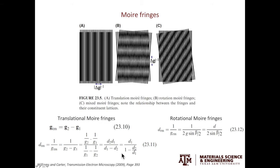Moving to the rotational moiré fringes. In this case, we assume we have only one type of lattice planes, but the top layer is rotated against the bottom layer. The spacing of the moiré fringes is a function of the rotational angle beta. It is simply d, the lattice spacing, over two sine of half beta. What this tells you is, by looking at the spacing of the moiré fringes, you can easily calculate the rotational angle of the top and bottom layers.